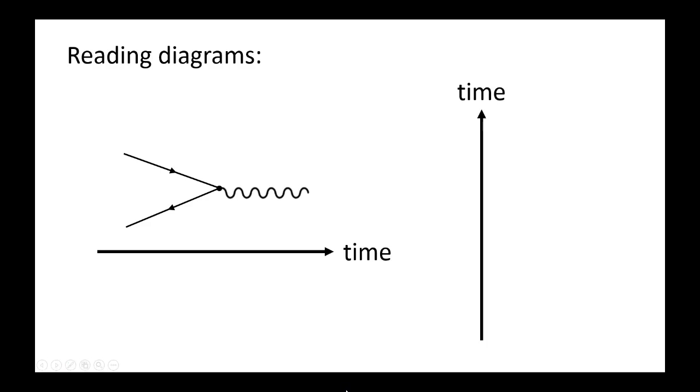The task for us next is to identify the initial moment and the final moment. Well, the time axis is going this way. So everything to the left, that's the initial moment. That's what happens before we reach the vertex. Everything to the right of the vertex, that's the final moment, which occurs after the vertex.